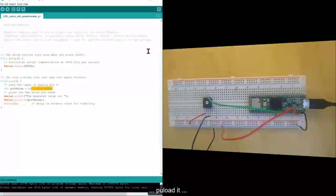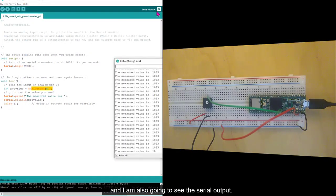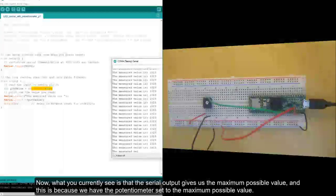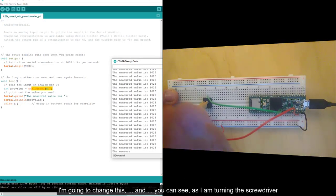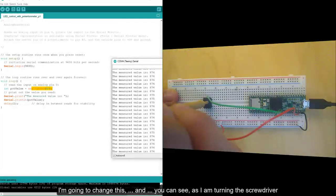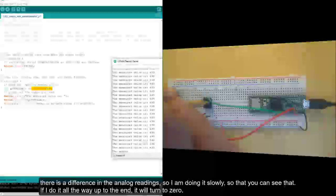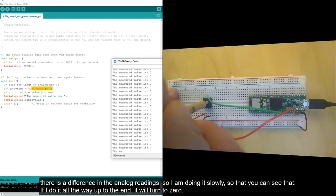Now, what you currently see is that the serial output gives us the maximum possible value, and this is because we have the potentiometer set to the maximum possible value. I'm going to change this, and you can see that as I'm turning the screwdriver, there is a difference in the analog readings. So, I'm doing it slowly so that you can see that. If I do it all the way up to the end, it will turn to zero.